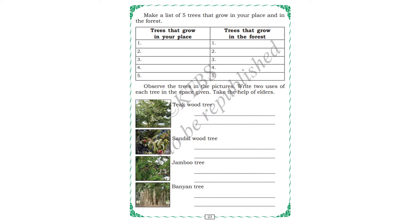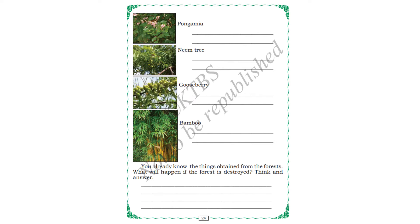Make a list of five trees that grow in your place and in the forest. You can tell me in the comments. Observe the trees in the picture and write two uses of each tree in the space given — take help from elders. Take teak wood tree — we can make teak wood furniture. Sandalwood also. Jambu tree. Banyan tree. Like that there are so many. Onigamu tree is a very good tree — it is used for many medicinal qualities. Gooseberry also. And bamboo is also used in so many types.